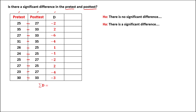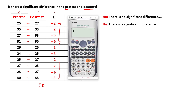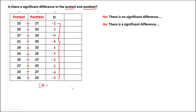Then we need to find the sum of the differences, so just add all these numbers: negative 2, plus 2, plus negative 6, plus negative 4, plus 1, plus negative 1, plus negative 2, plus positive 2, plus negative 4, then plus negative 3. So the sum of the differences is negative 17.